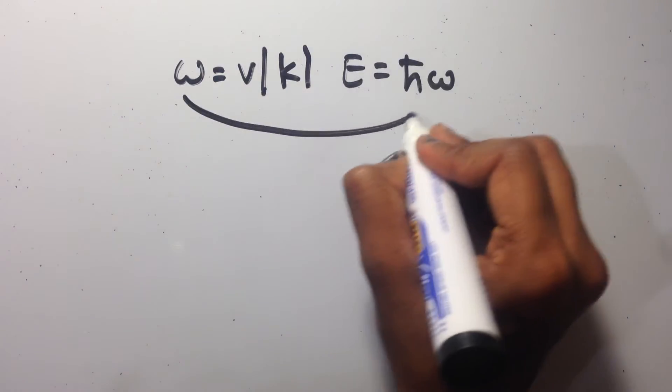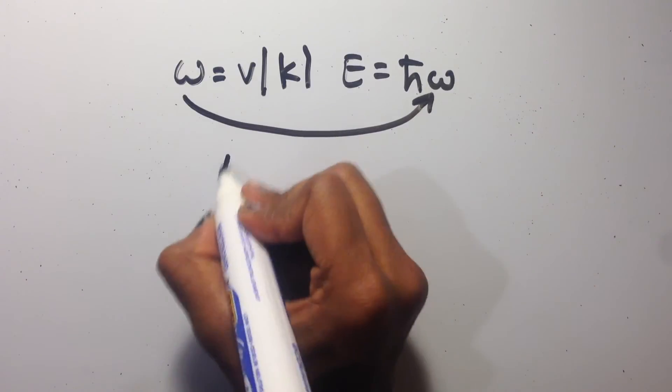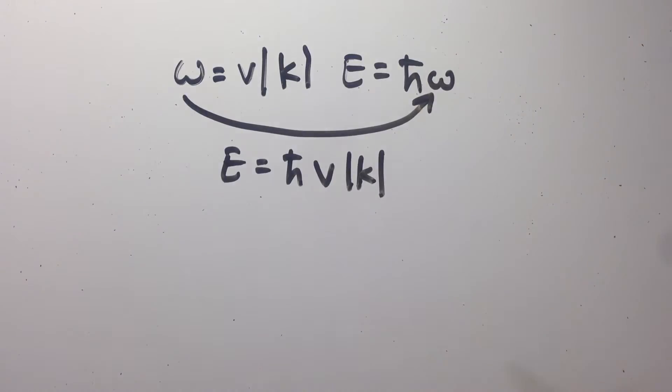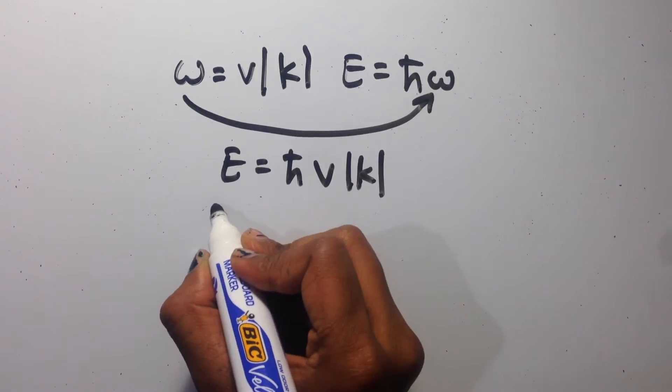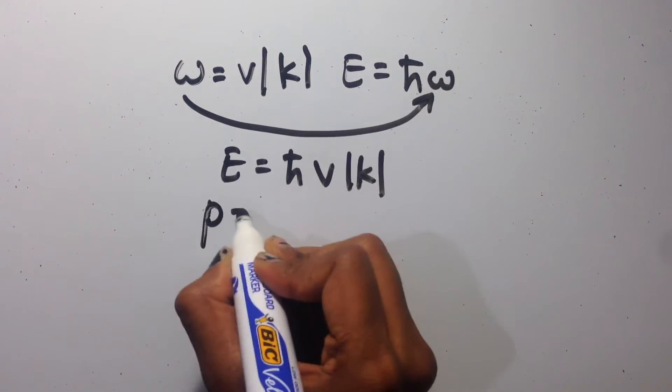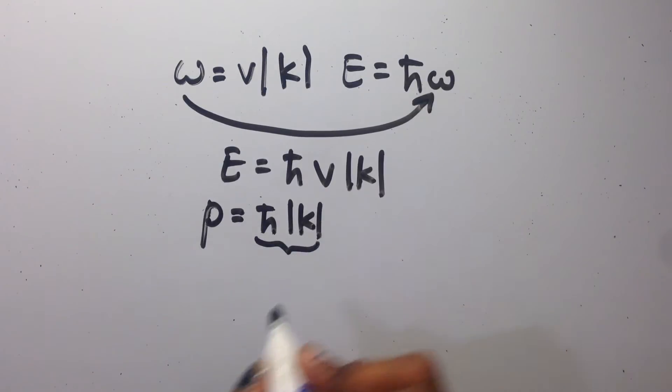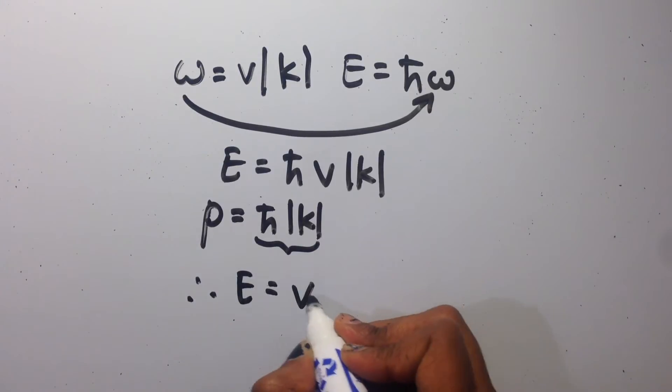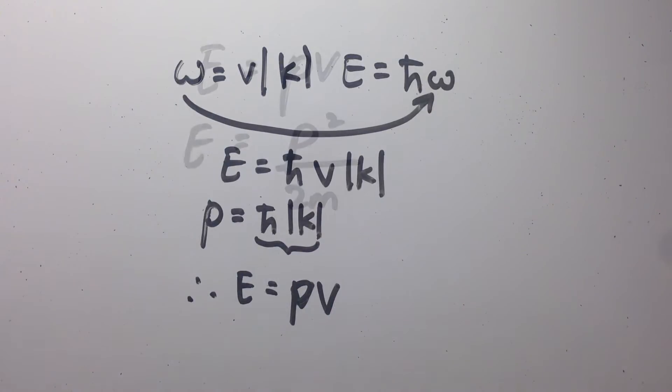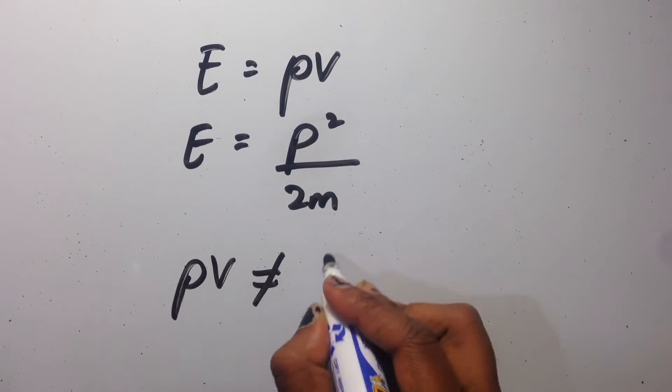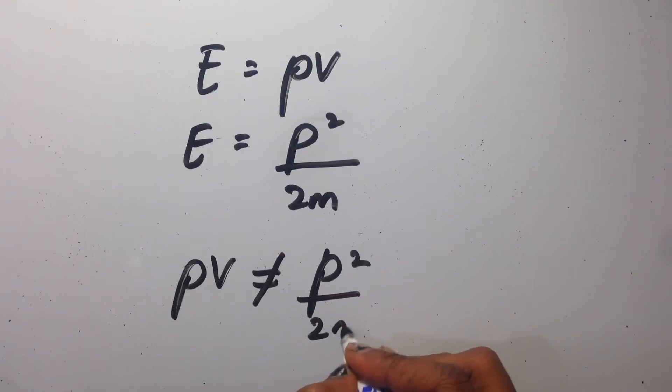Subbing in our equation for omega into our equation for energy gives us E equals h bar v k. We know that momentum p equals h bar k. Therefore our energy E will equal to p v, which is the energy of a photon. We can see that this doesn't agree with our equation for energy of classical particle, which is p squared over 2m.